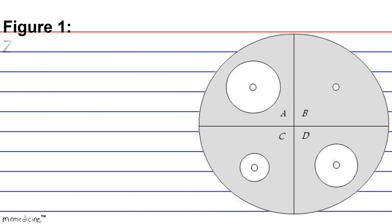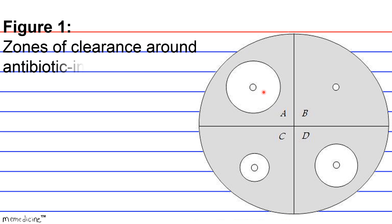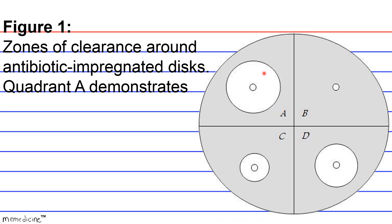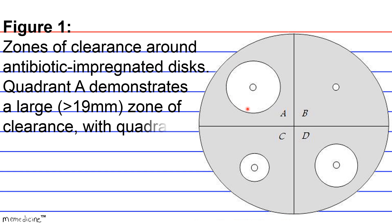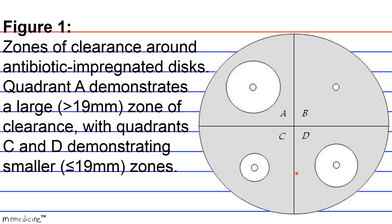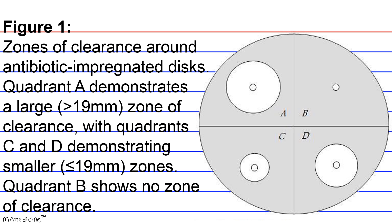Figure one shows zones of clearance around antibiotic-impregnated discs. Quadrant A demonstrates a large zone of clearance greater than 19 millimeters, with Quadrants C and D demonstrating smaller zones, and Quadrant B showing no zone of clearance.